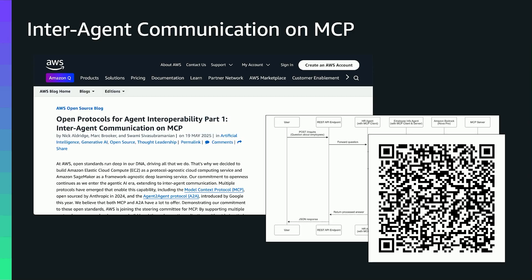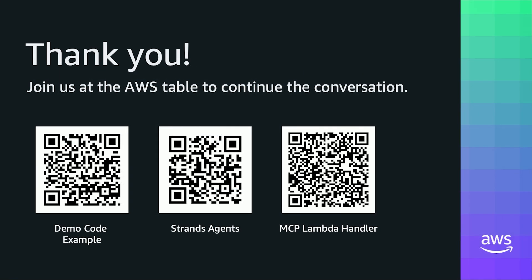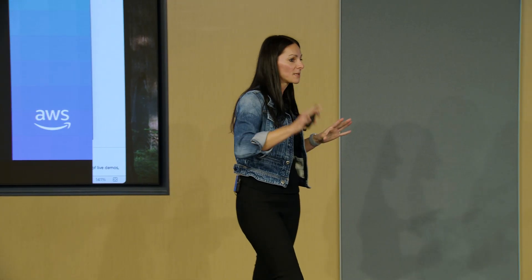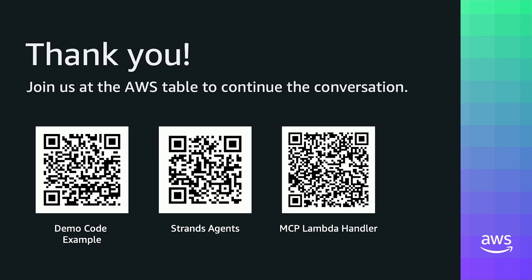If you want to play around, if you're a D&D fan and want to set this up, here's the link to Mike's code repo. I also have a link for Strands Agents — it's a model-driven SDK to build agents that is not specific to AWS. It integrates with Amazon Bedrock, Meta Llama models, Anthropic, and LiteLLM so you can use it with OpenAI models too. It's really an open, flexible, open source SDK, and there's already a lot of excitement in the community. The Lambda handler code is also part of the AWS Labs MCP repo.